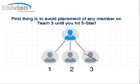The first thing you want to do is avoid placement of any new member on Team 3 until you reach the level of 5-star. You can see the red line slash through Team 3, indicating that you don't want to select Team 3. So now you're narrowed down to two teams — Team 1 and Team 2 — to get started building your Savion business.